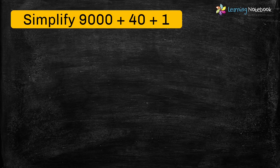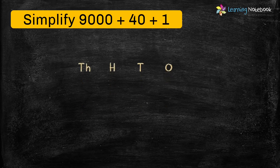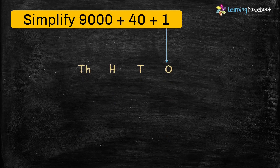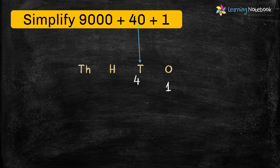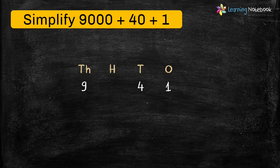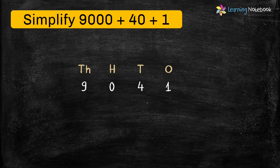Next question: Simplify 9000 plus 40 plus 1. Students, let's solve this question without actually adding the expanded form. We will start solving from the right. The first number on the right is 1, which forms the digit at 1's place. Next number is 40, which forms the digit at 10's place. And the next number is 9000, which forms the digit at 1000's place. Notice that there is nothing mentioned about the 100's place in the expanded form, so the digit at 100's place will be 0. Therefore, the number formed is 9041.